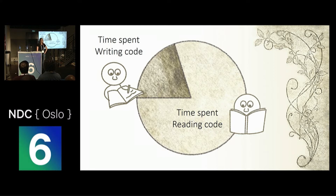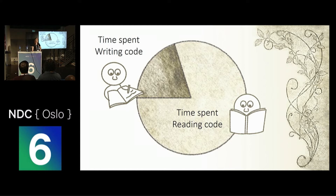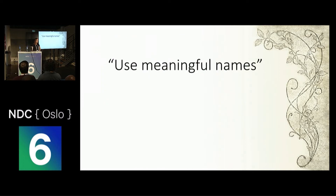Even if you look at texts that are more specific to that subject, like Clean Code or Code Complete, they spend maybe four to five percent of their time on naming, and it's mostly pedantic things like how long a variable name should be, or capitalization rules, or coding conventions. For the most part, we have relegated naming to a few simple platitudes — for example, use meaningful names. True, but oversimplification.